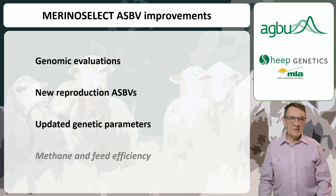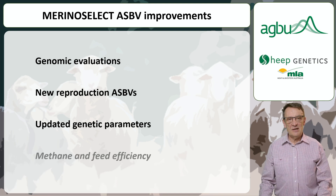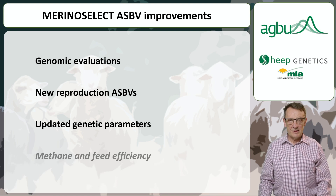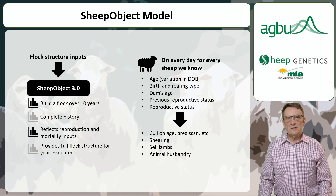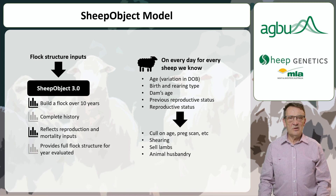Our current plan is to develop genomic evaluations for methane and feed efficiency in the next two to three years, and it's possible that other traits will come online as well. To modernise our indexes and take advantage of those developments, we've created a new sheep object software system from the ground up, utilising a much more comprehensive model.